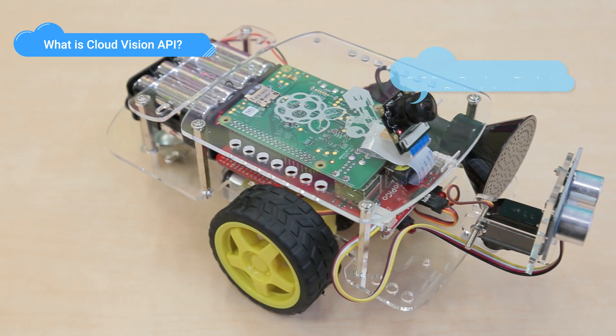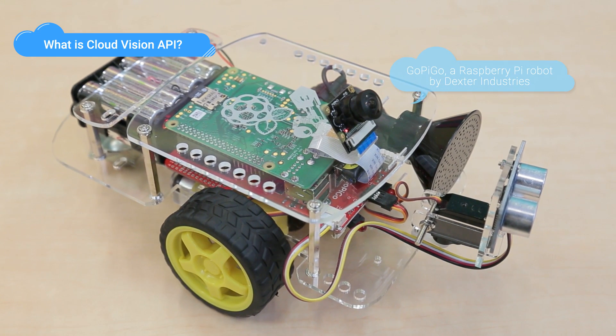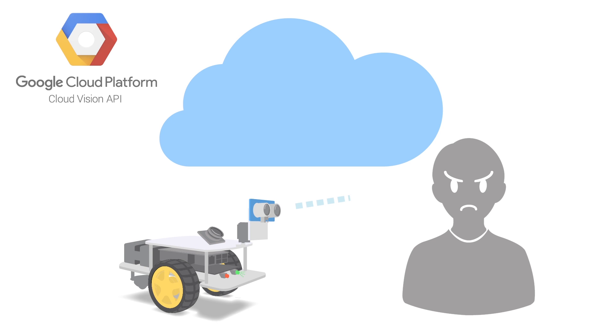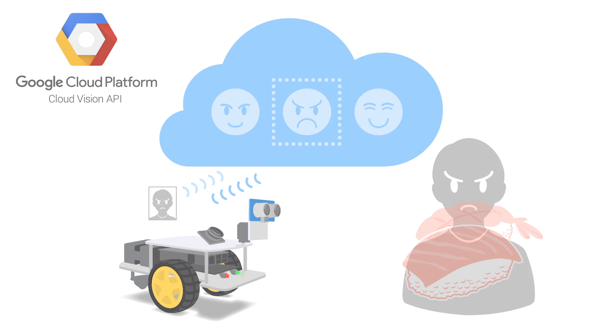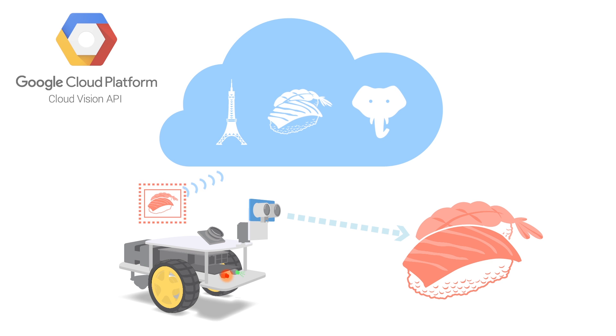The service is so easy to use. As one example of the use cases, you can have any Raspberry Pi robot like GoPiGo calling the Cloud Vision API directly. The bot can send the images taken by its camera to the cloud and get the analysis result in real-time. It detects faces in the image along with the associated emotions. The Cloud Vision API is also able to detect entities within the image.